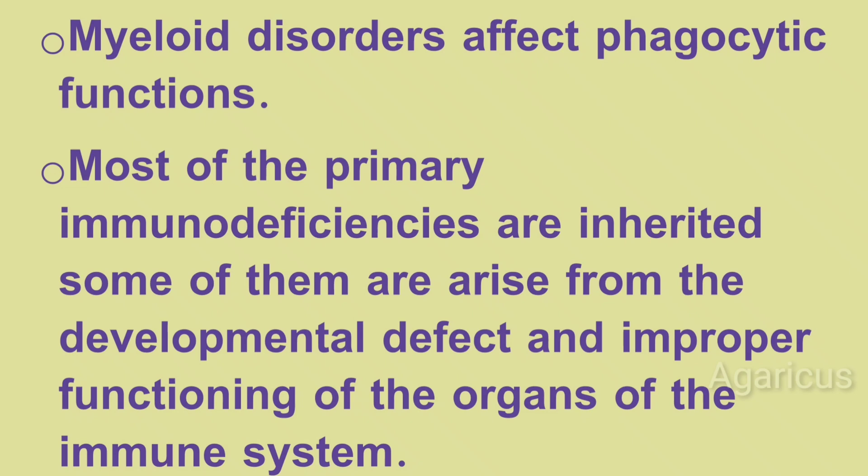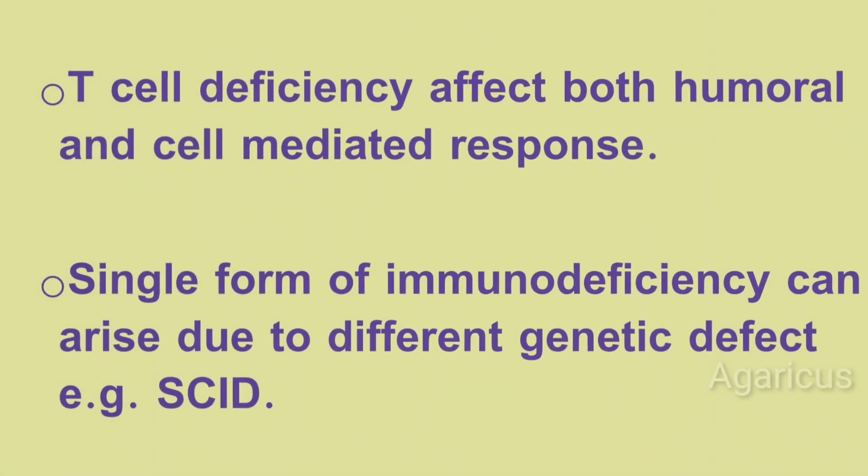Most primary immunodeficiencies are inherited. Some arise from developmental defects and improper functioning of the organs of the immune system. T-cell deficiency affects both humoral and cell-mediated response. A single form of immunodeficiency can arise due to different genetic defects — for example, SCID.